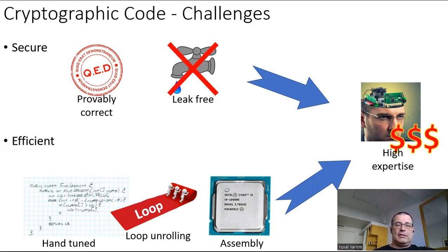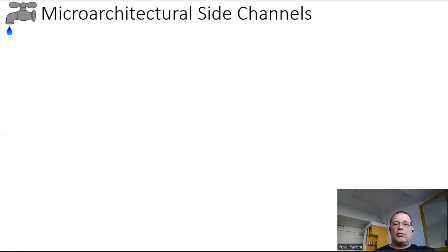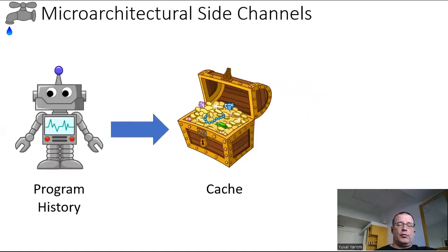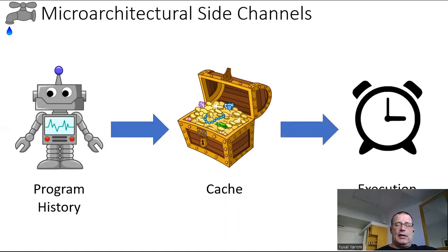So let us now look at what we mean by leak-free. Our main threat that we are looking at in this talk is microarchitectural side channels. In a nutshell, the processor contains multiple components that aim at improving the performance of the code that runs. For example, we have a cache. And when the program runs, it affects the cache. Data is stored in the cache depending on what the program accesses. And at the same time, the cache affects the execution time of the program, because if data is cached, access to it is much faster.